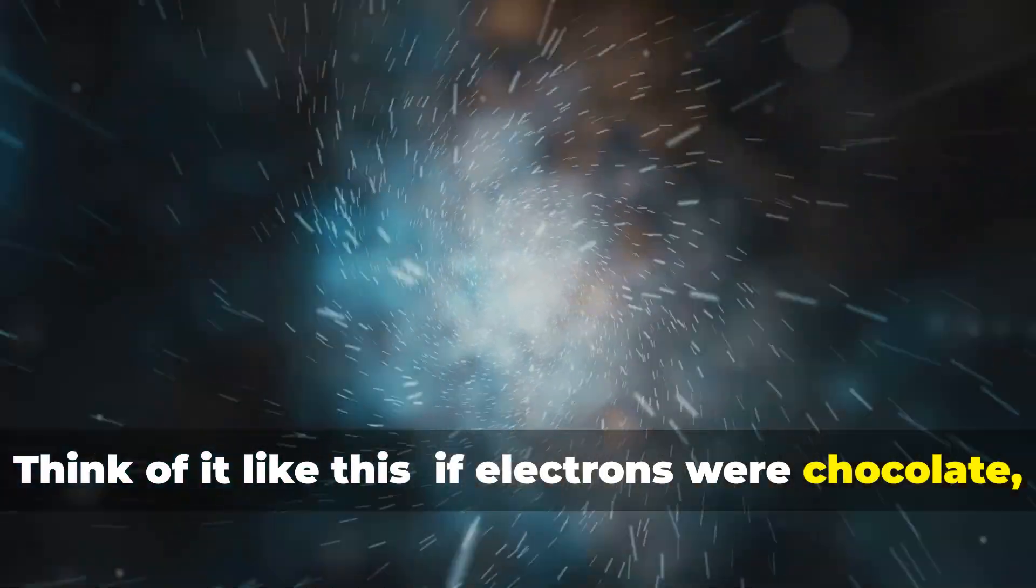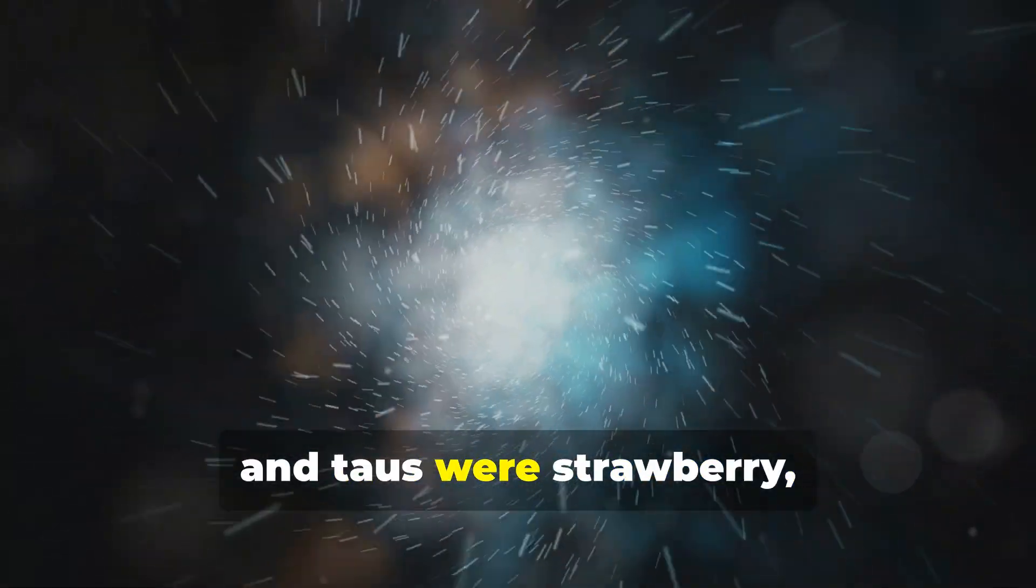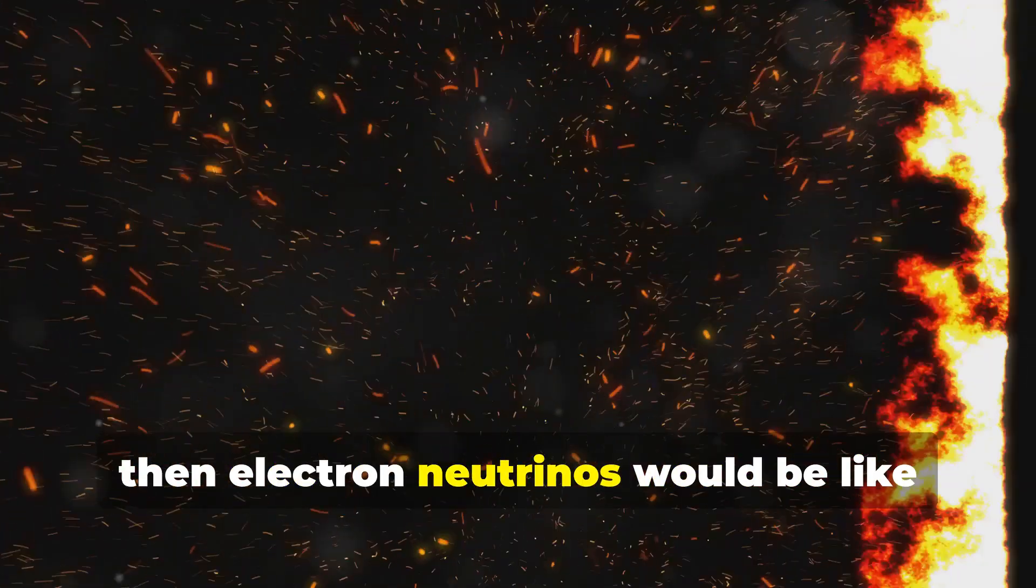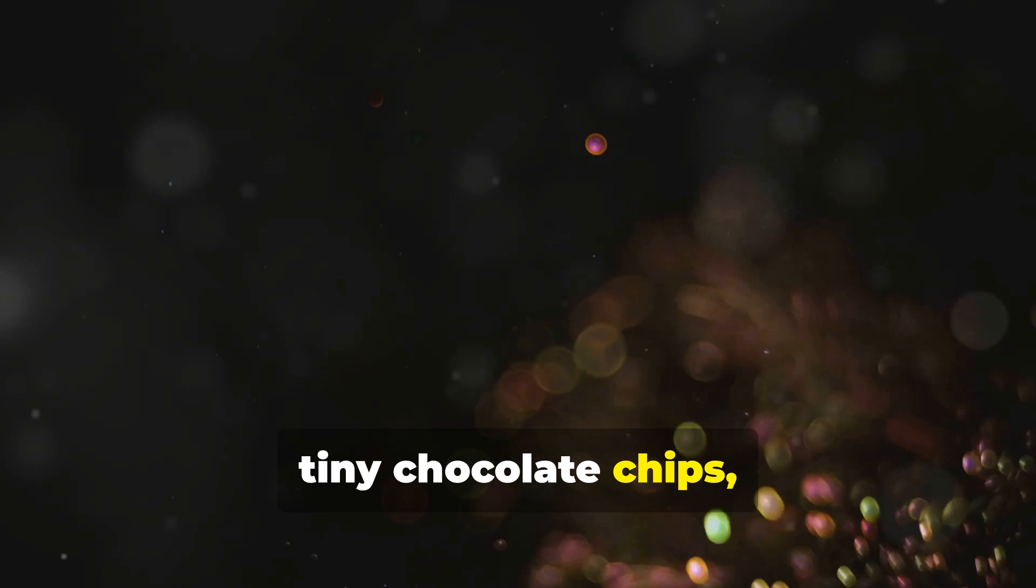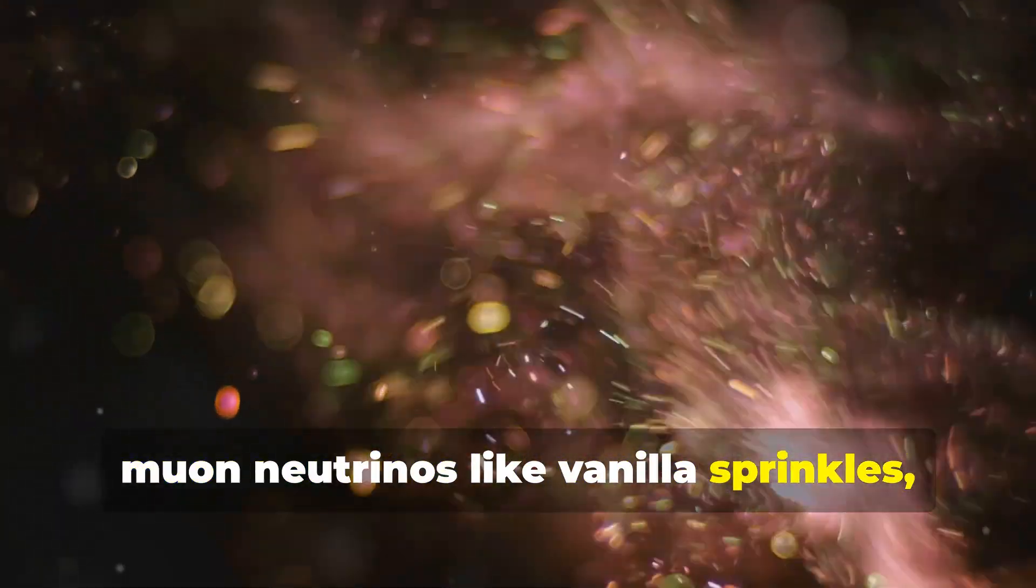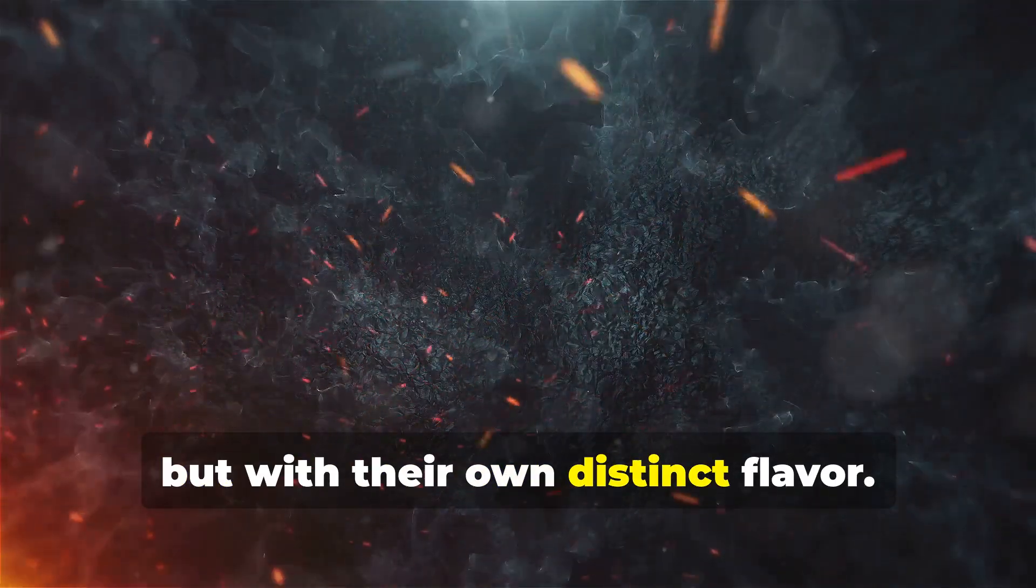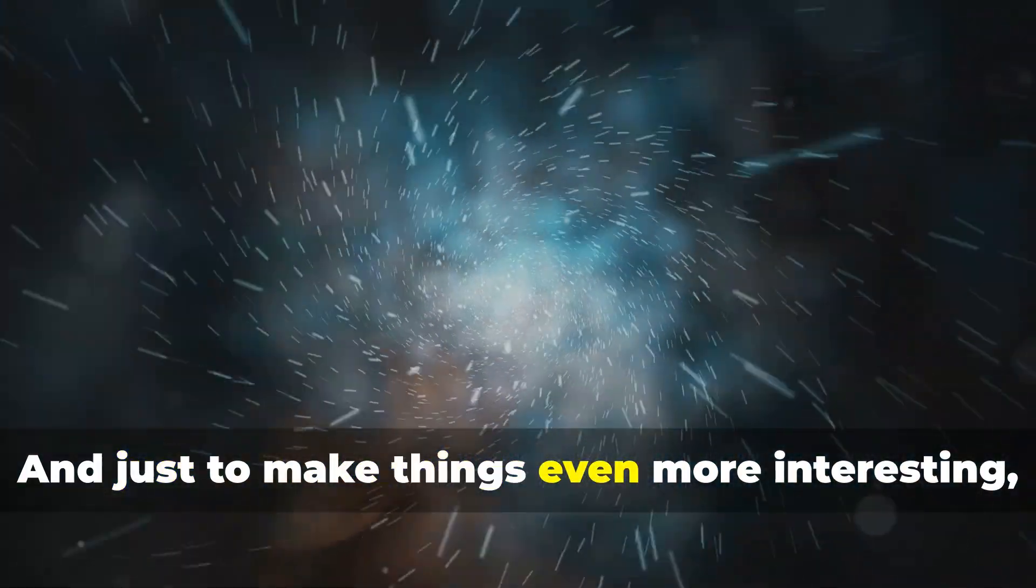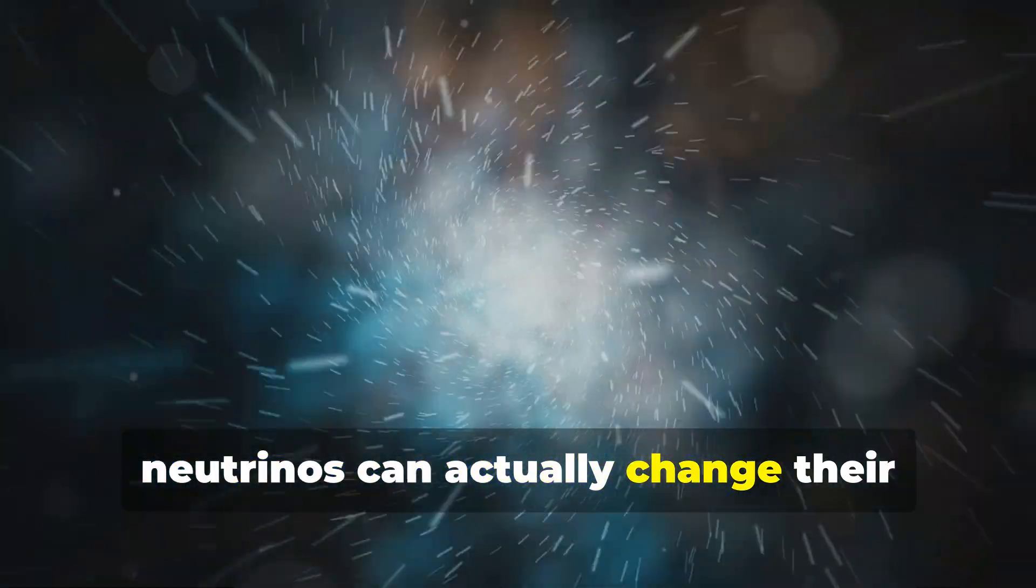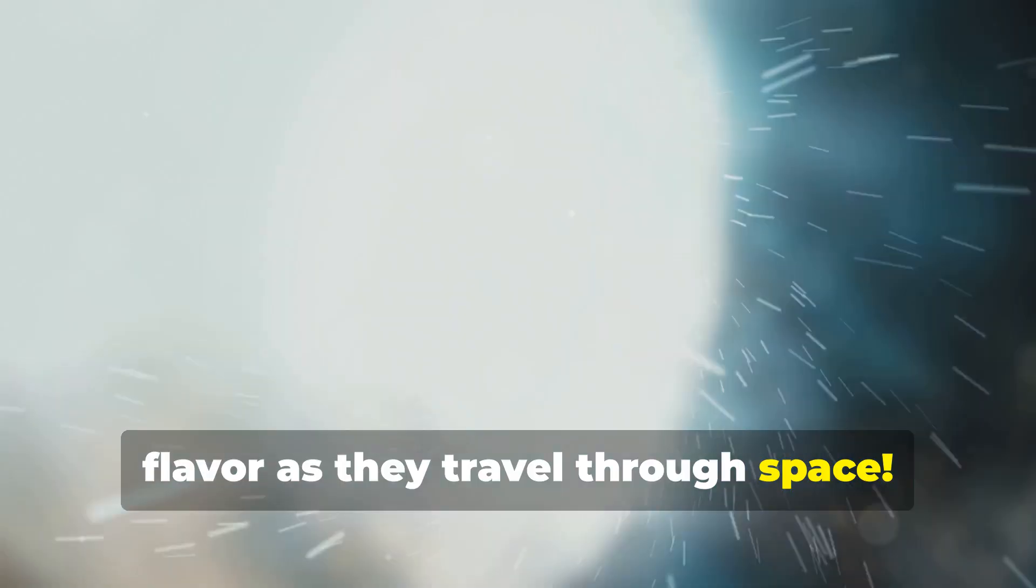If electrons were chocolate, muons were vanilla, and taus were strawberry, then electron neutrinos would be like tiny chocolate chips, muon neutrinos like vanilla sprinkles, and tau neutrinos like strawberry swirls. They're all neutrinos but with their own distinct flavor. And just to make things even more interesting, neutrinos can actually change their flavor as they travel through space.